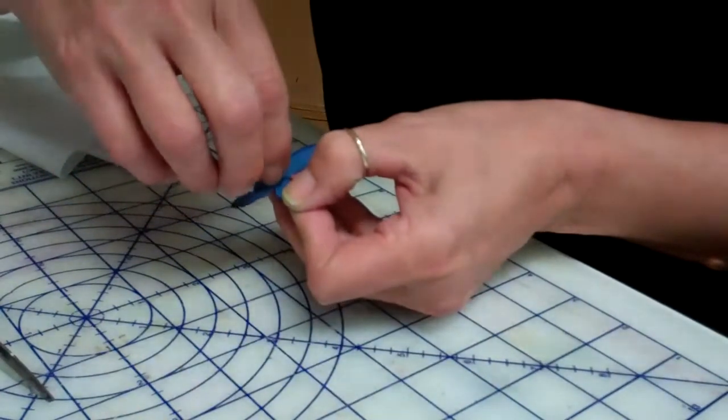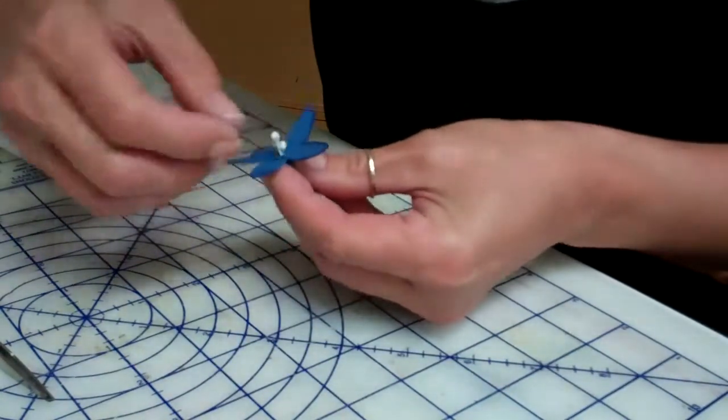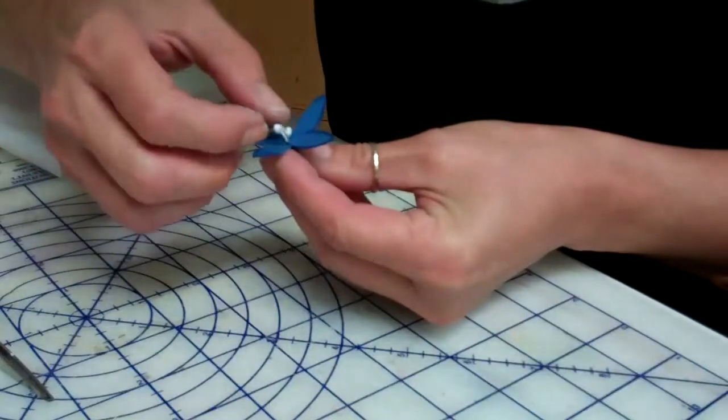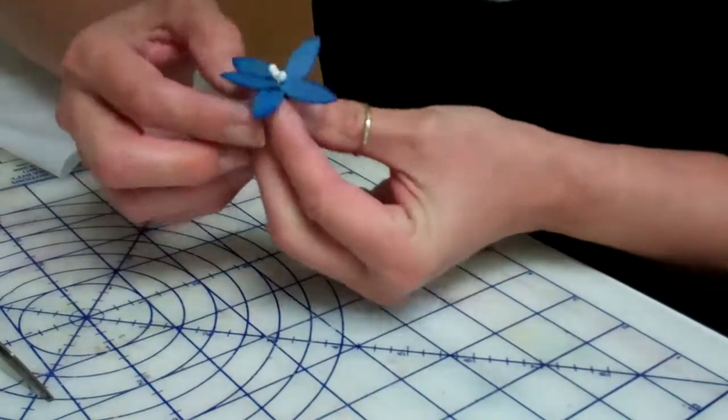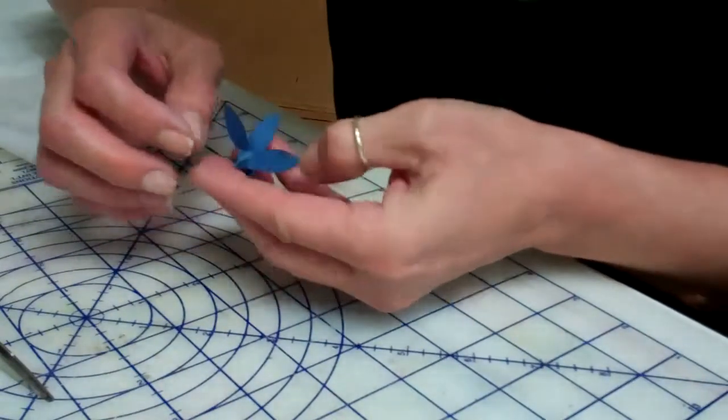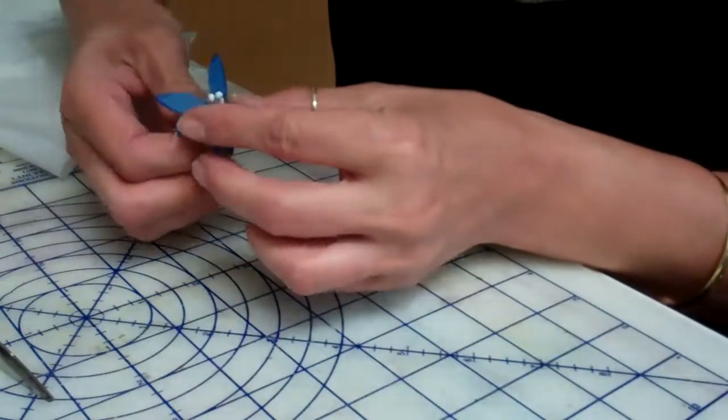And then place it in the center and just sort of pull them apart a bit. And that's all there is to it and they're really a pretty little flower.